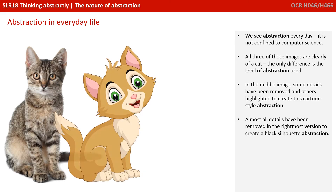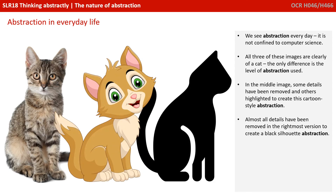We see abstraction every day — it's not confined to the world of computer science. All three of these images are clearly of a cat; the only difference is the level of abstraction used. In the middle image, some details have been removed and others highlighted to create a cartoon-style abstraction. Almost all details have been removed in the rightmost version to create a black silhouette using abstraction.